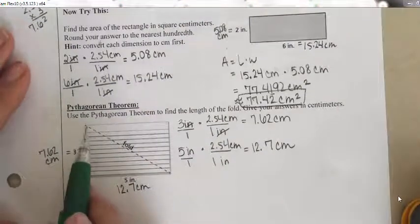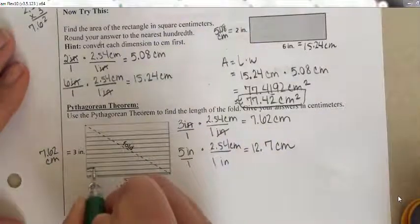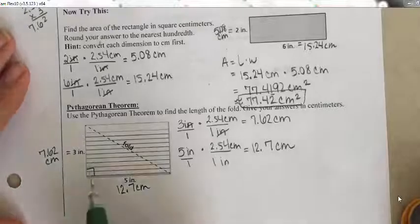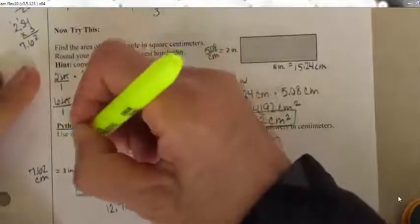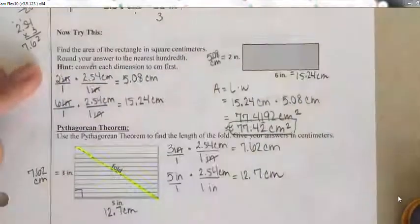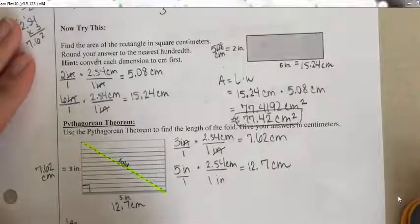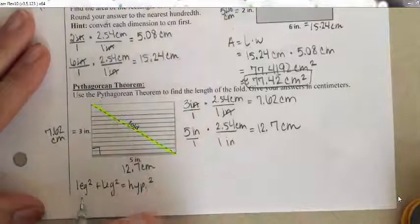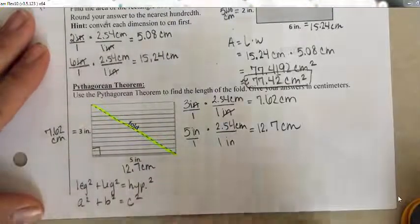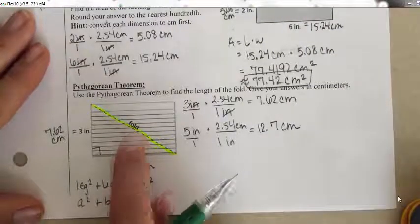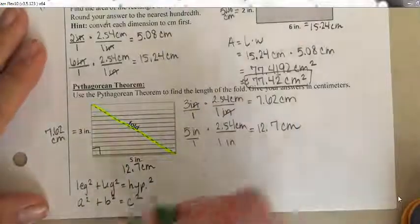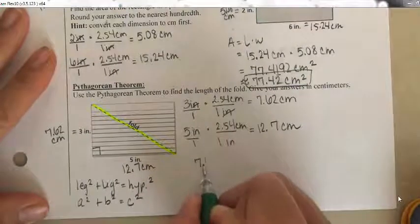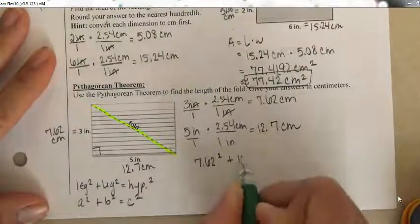Now that everything is in centimeters I can find the length of the fold using the Pythagorean theorem, which applies to right triangles. The side across from the 90-degree angle is the hypotenuse. The Pythagorean theorem states: leg squared plus leg squared equals hypotenuse squared — or a² + b² = c². Our hypotenuse is unknown, so I'll call it h. I'll do 7.62 squared plus 12.7 squared equals h squared.